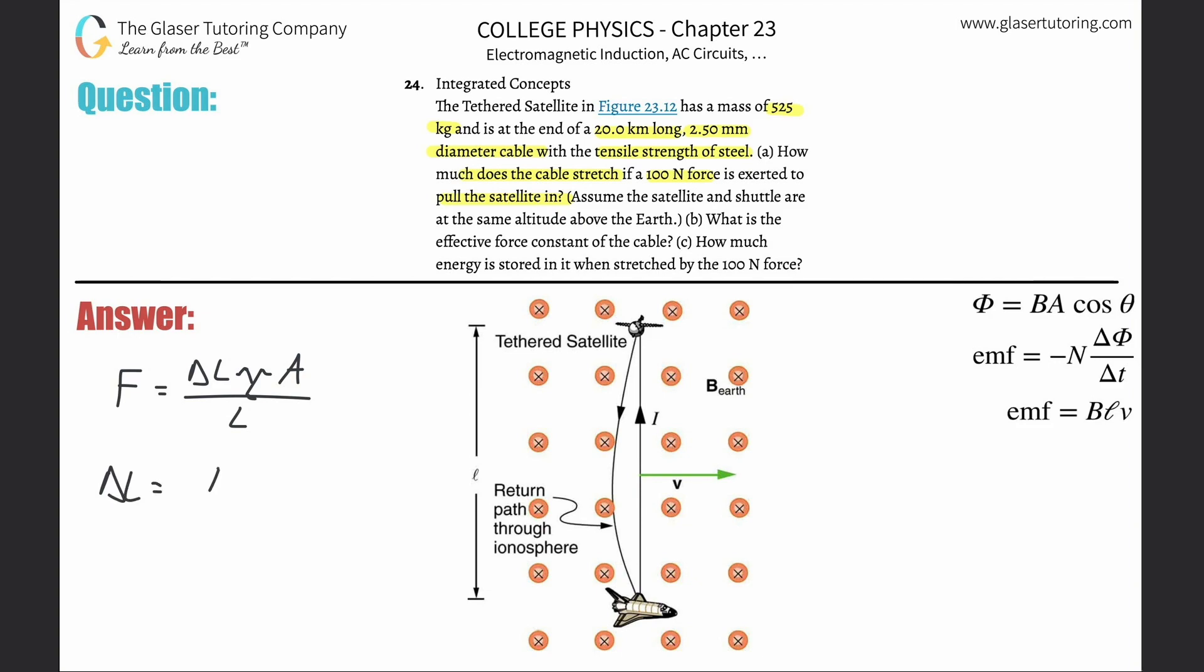That's simply going to be the force applied multiplied by the overall length of the wire, divided then by the Young's modulus multiplied then by the cross-sectional area.